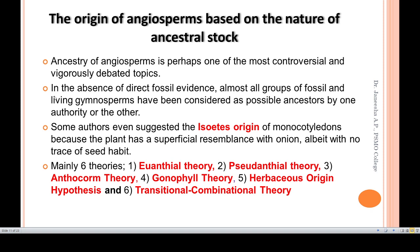The third type of theory regarding the origin of angiosperms is based on the nature of the ancestral stock. This is one of the most controversial topics — what is the exact ancestor of angiosperms? In the absence of direct fossil evidence, almost all groups of fossils and living gymnosperms have been considered as possible ancestors. There are mainly six theories: euanthial theory, pseudanthial theory, com theory, gonophil theory, herbaceous origin hypothesis, and transitional combinational theory.